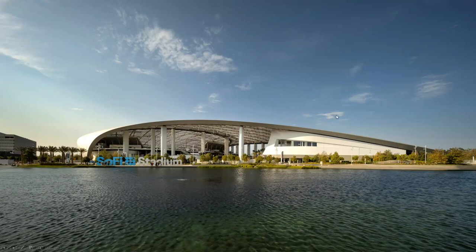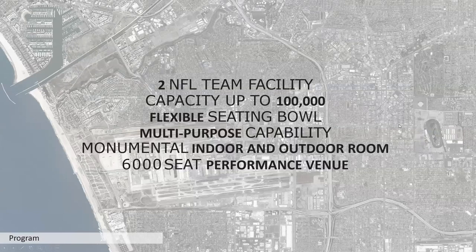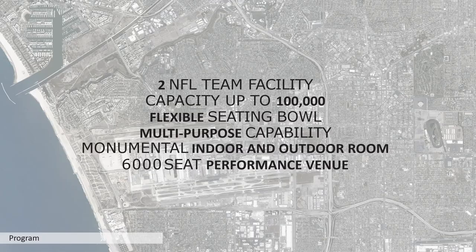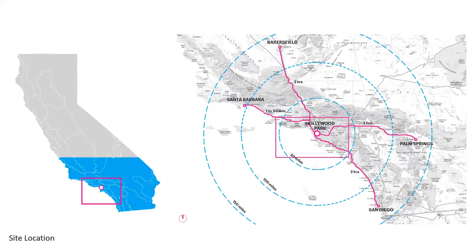HKS was the design architect, with Walter P. Moore as structural engineer, Mia Lara as landscape architect, Henderson Engineers for mechanical, electrical, and plumbing, and AECOM Hunt Turner as contractors. The program was to house two NFL teams with a capacity of up to 100,000 people, with flexible seating in a bowl, multi-purpose capability, a monumental indoor and outdoor room, and a 6,000-seat performance venue. The regional reach of SoFi Stadium is roughly 150 miles — as far north as Santa Barbara and Bakersfield, east to Palm Springs, and south to San Diego.